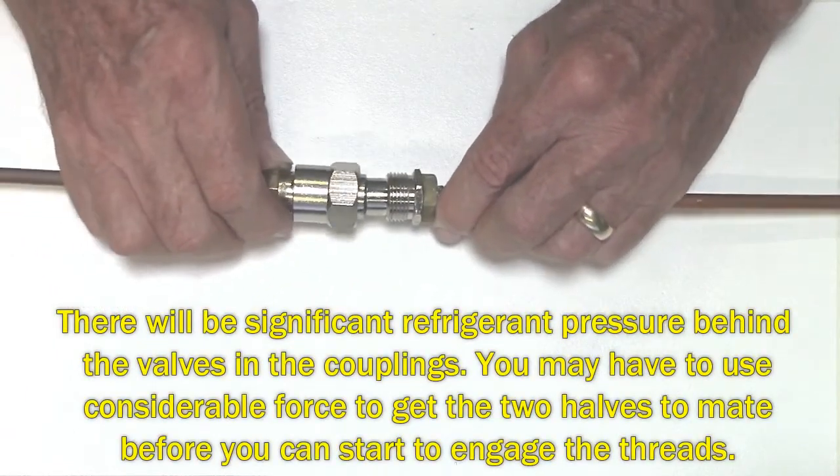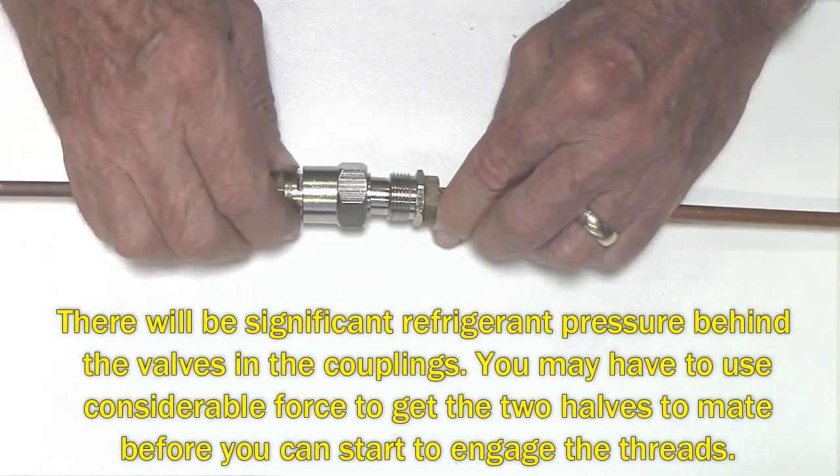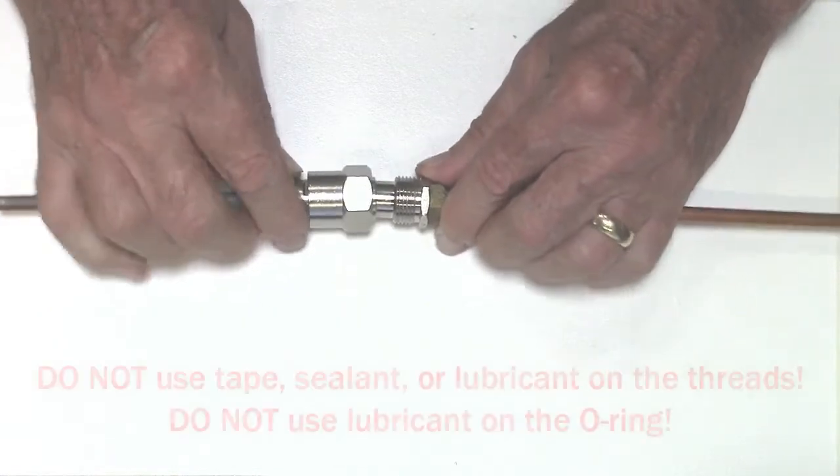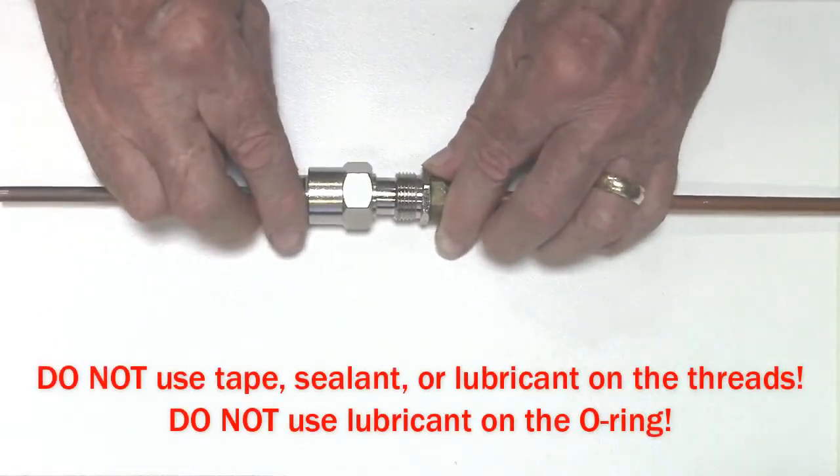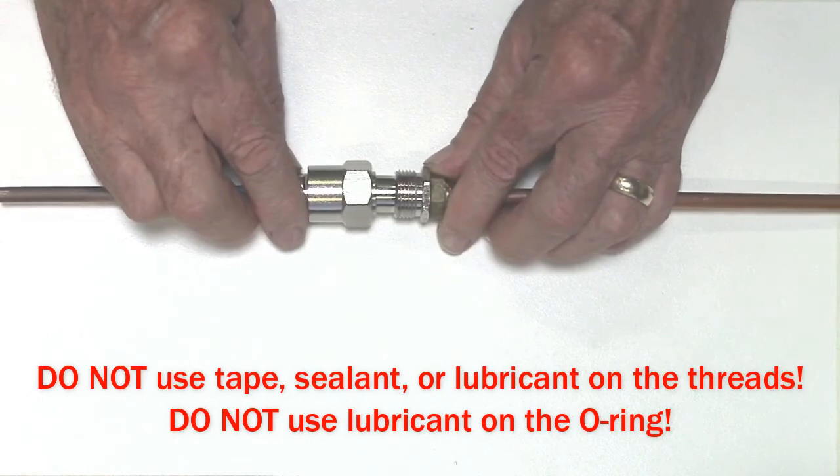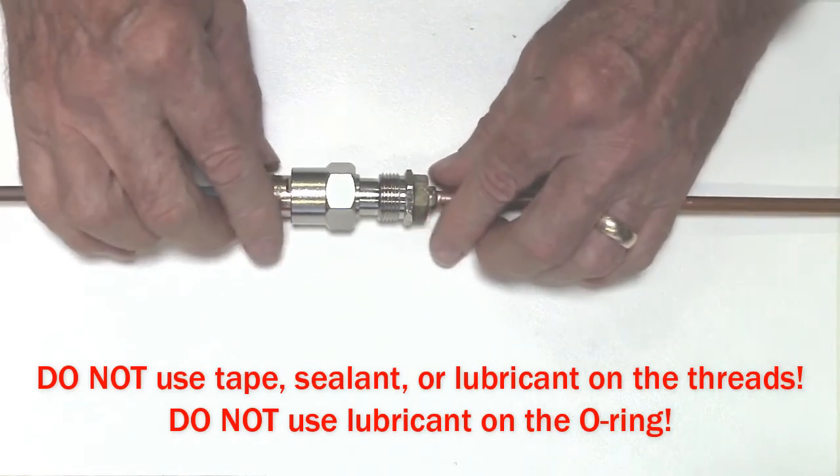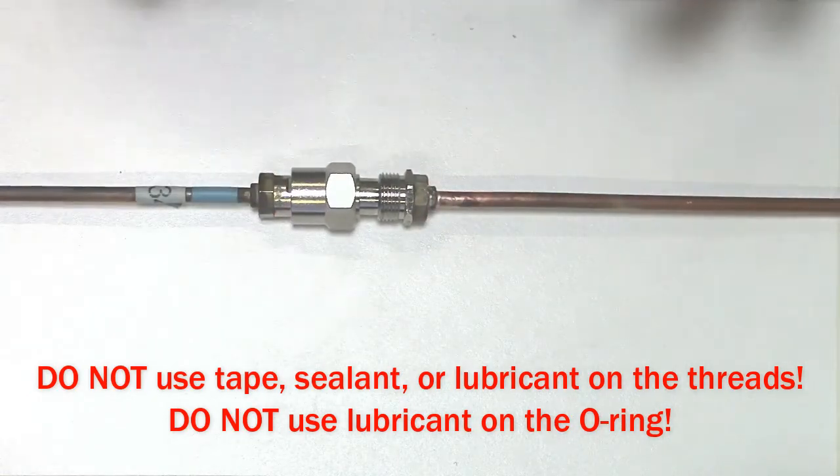Once you put it together and cover that o-ring, now the system is sealed. So don't use any liquid or tape on the threads or on the o-ring—that's not necessary. You don't need to use anything at all, just as it comes.